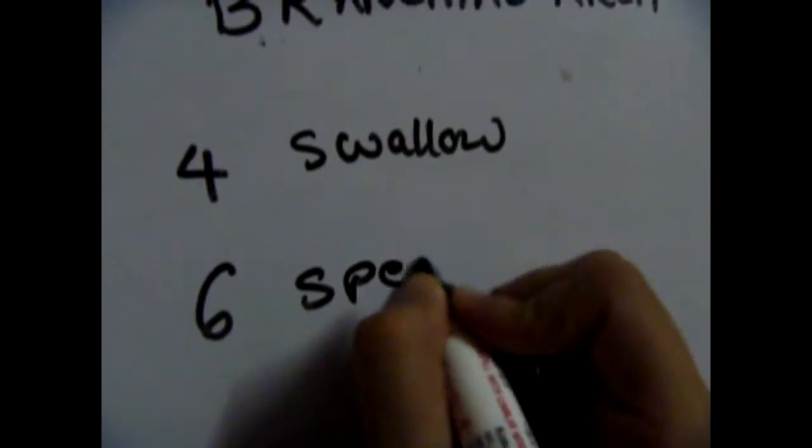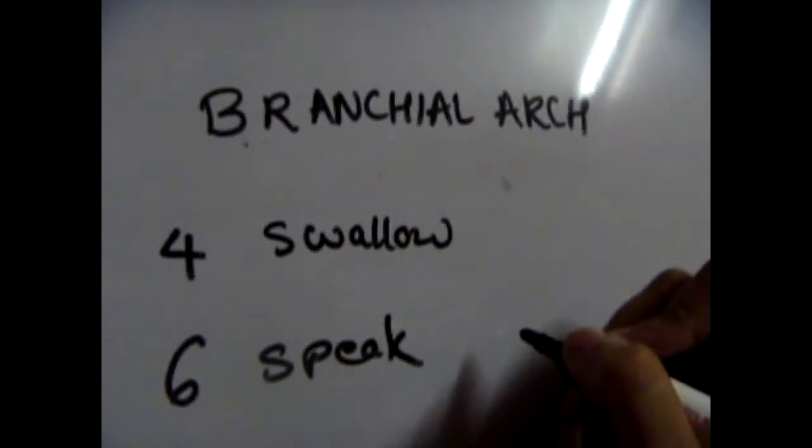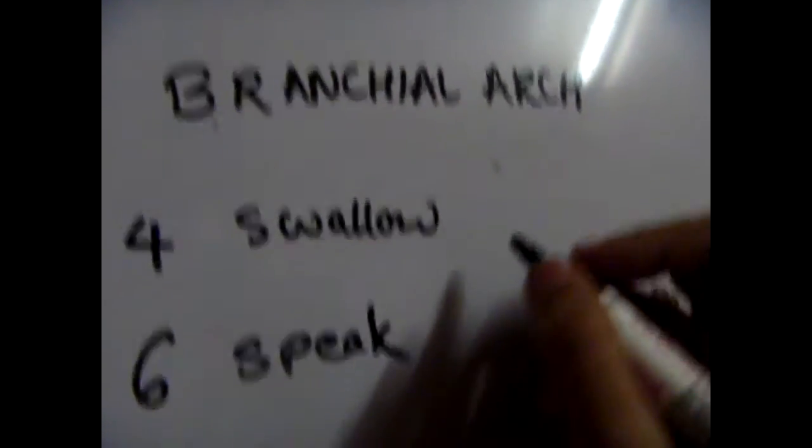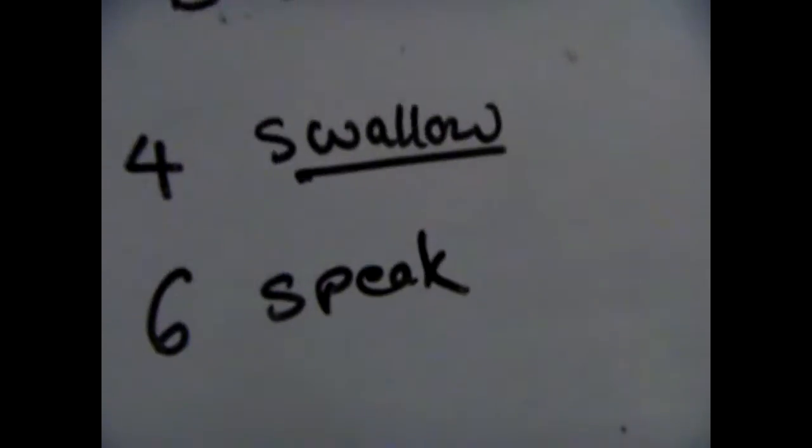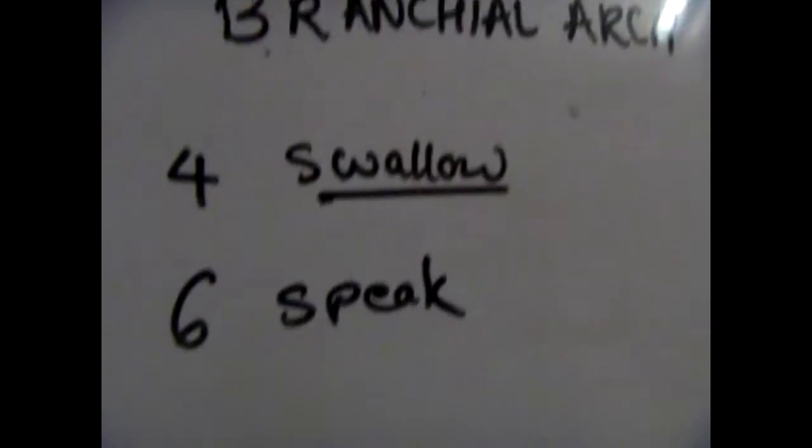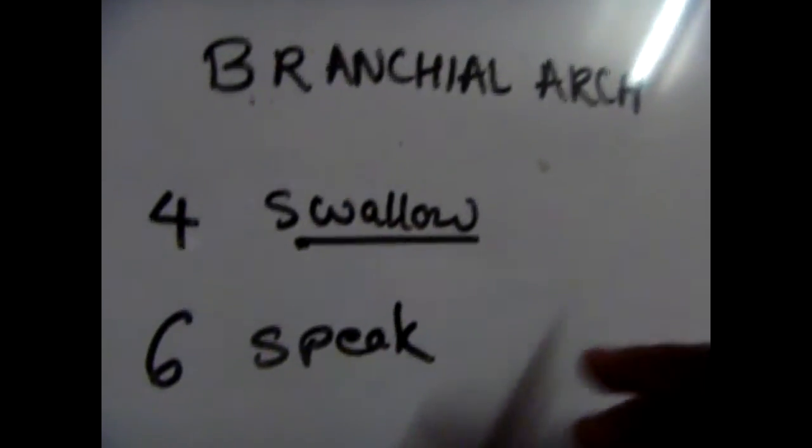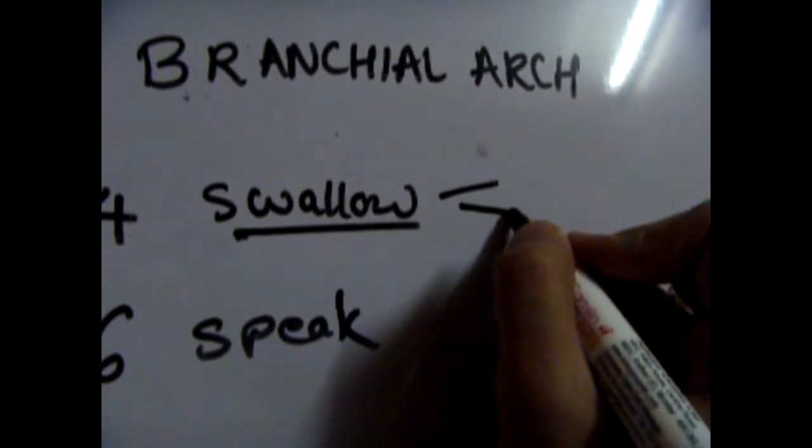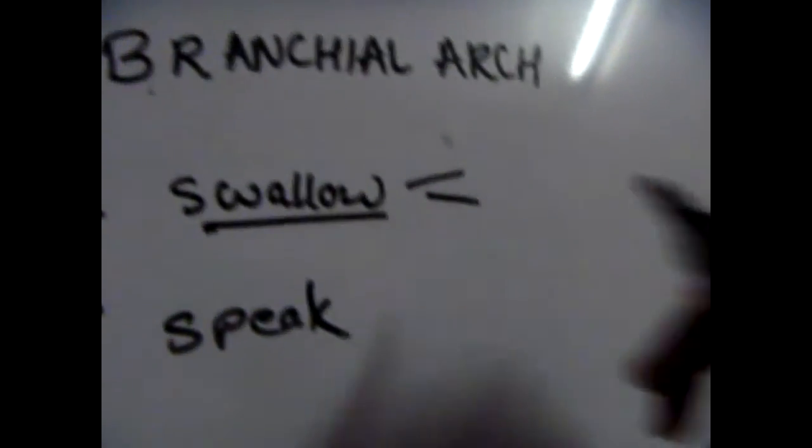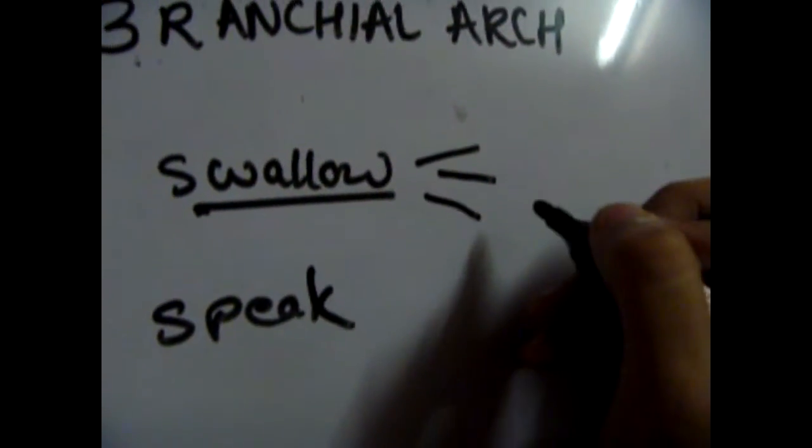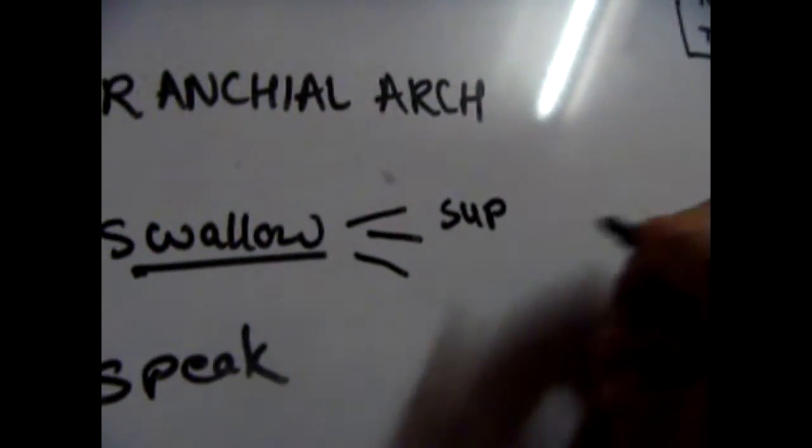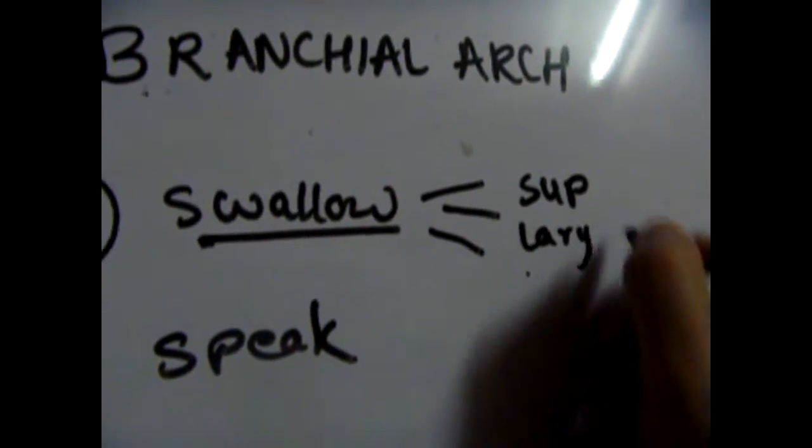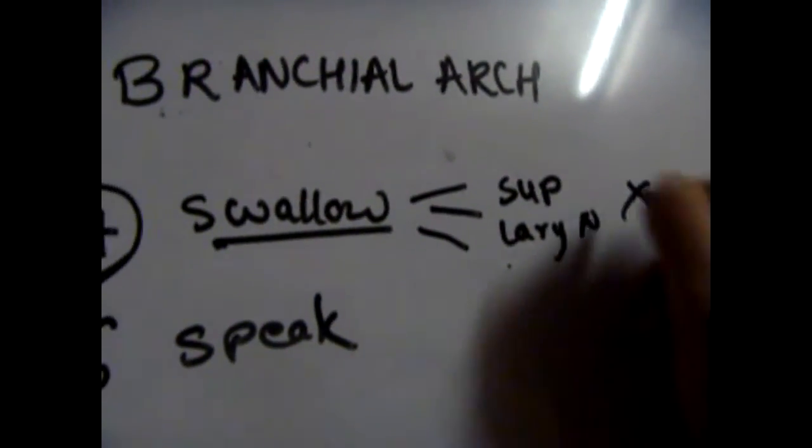The fourth pharyngeal arch gives rise to the pharyngeal constrictors, like cricothyroid and all of that. So anything associated with swallowing is with the fourth branchial arch. The nerve associated with that is the superior laryngeal nerve, which is a branch of the tenth cranial nerve.